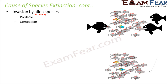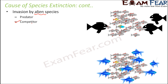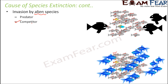It can also happen when the alien species is a competitor. If newly introduced fishes feed on the same prey as the existing native fishes, both compete for the same resources. Over time the alien species keeps increasing in number, posing a serious threat to the existence of the native species.